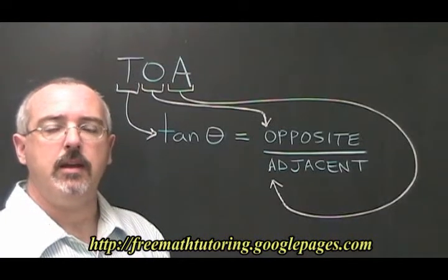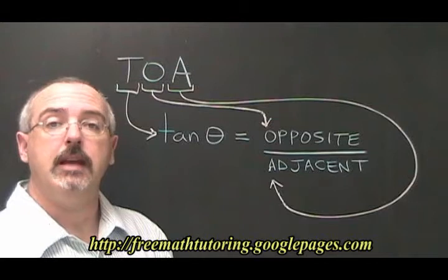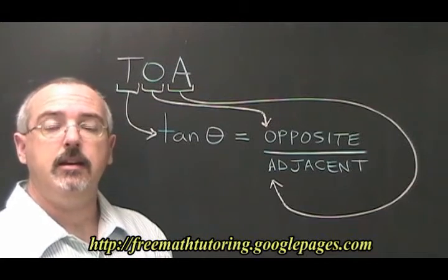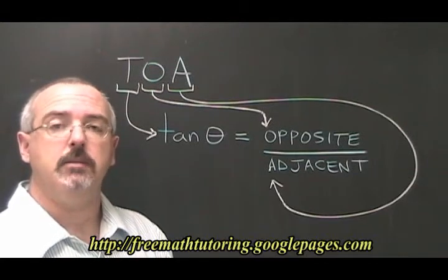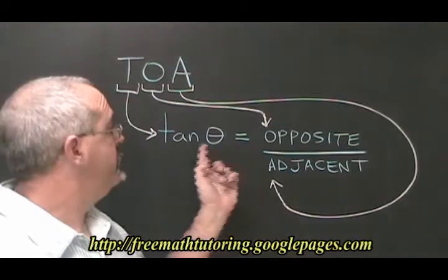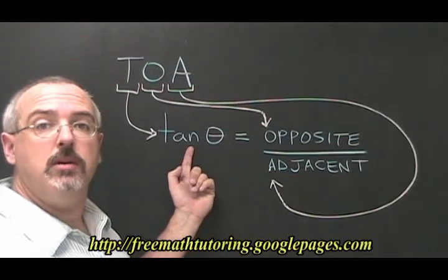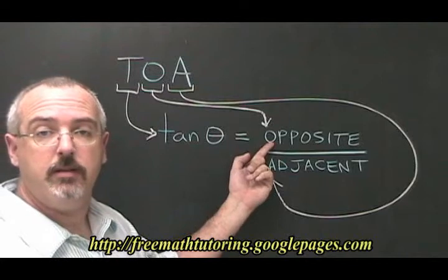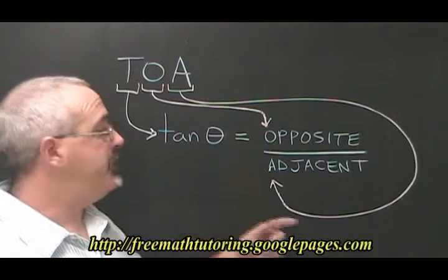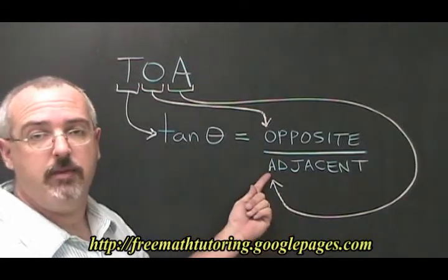TOA is a memory key to help you remember the TAN formula. The T in TOA stands for TAN, which comes first in our formula. The O stands for opposite, which comes on the top of the other side. And the A stands for adjacent, which comes last on the bottom of the other side.